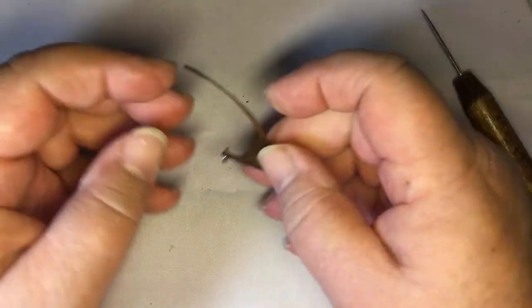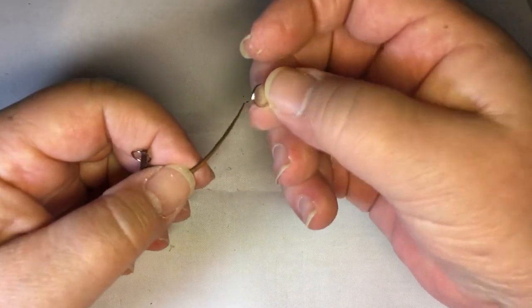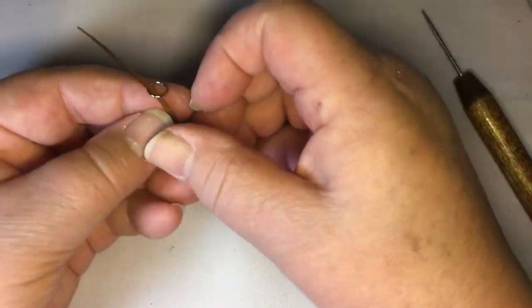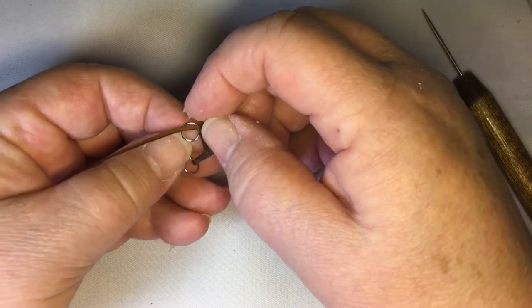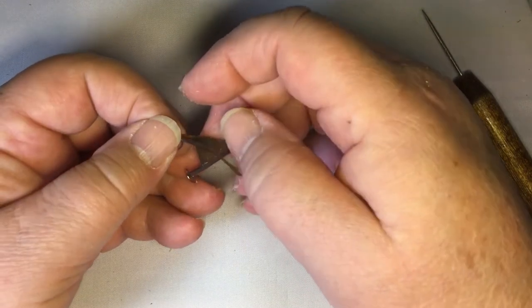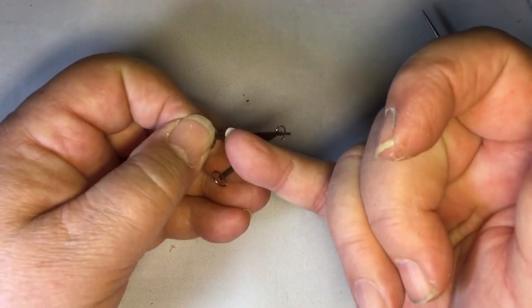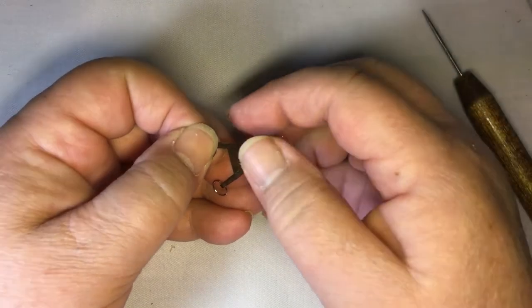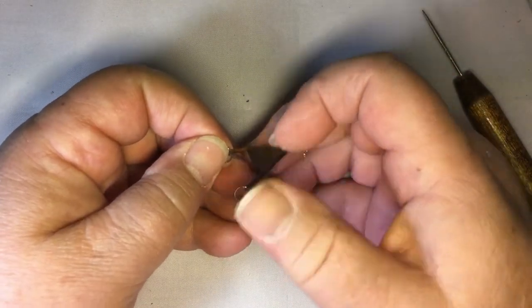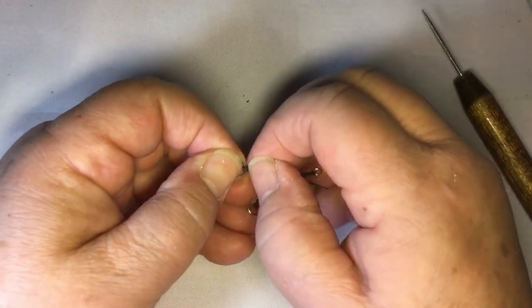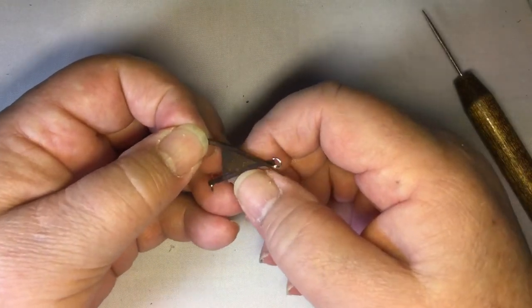All right, so the next thing is going to be this other jump ring. And if eyeballing is not your thing, you can have the jump rings right on the edge here, so you don't have to kind of do what I'm doing. I want to make sure they're both the same length on both sides.